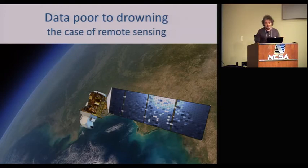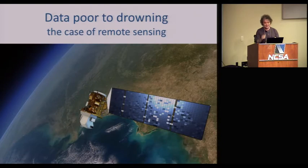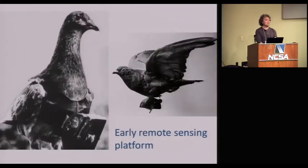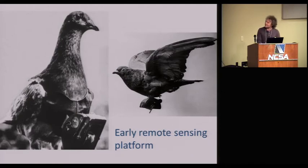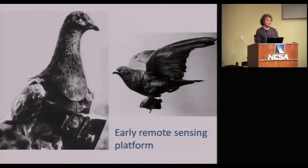Just by way of an introduction, data poor to drowning — I'm going to look at just the restricted case of remote sensing. Early remote sensing platforms included the Bavarian pigeon corps from a whole century ago, over 100 years ago. These platforms were quite unstable. The spectral and temporal resolutions were very poor. It was a panchromatic photograph that was captured. And unfortunately, during conflicts, they tended to be shot down by enemy soldiers — not so much because they wanted to stop the intel, but because they were hungry.